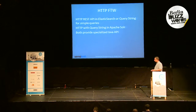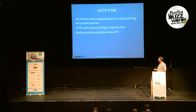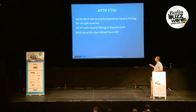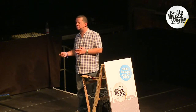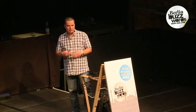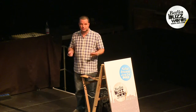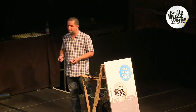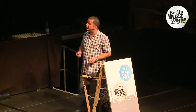Both servers provide HTTP API. When it comes to Elasticsearch, we can use both the query string or sophisticated JSON queries. With Solr, we have the query string where we can add parameters to use all the functionalities. They both provide specialized Java API to connect to them, and there are multiple libraries available for both search engines.